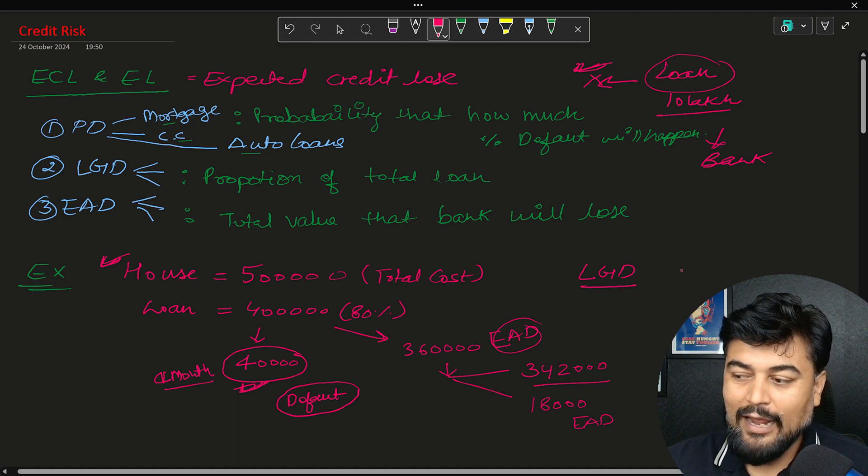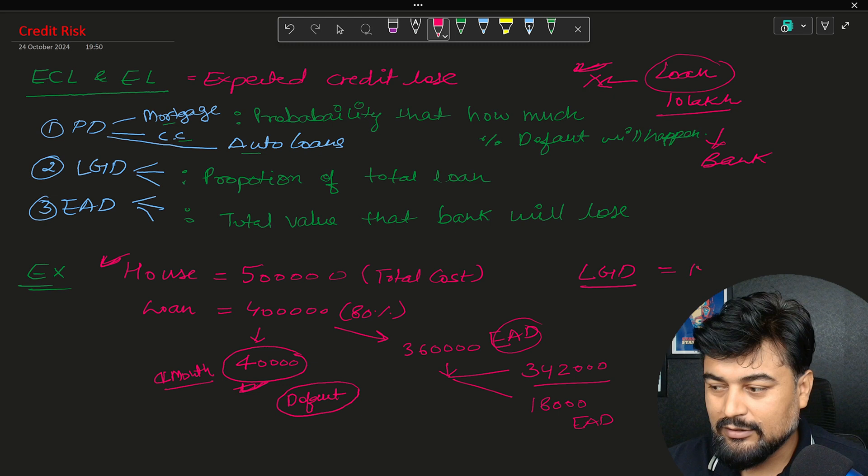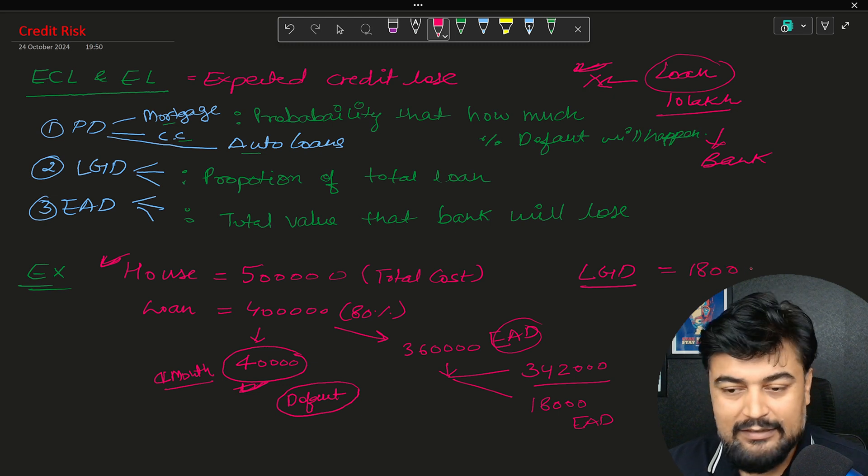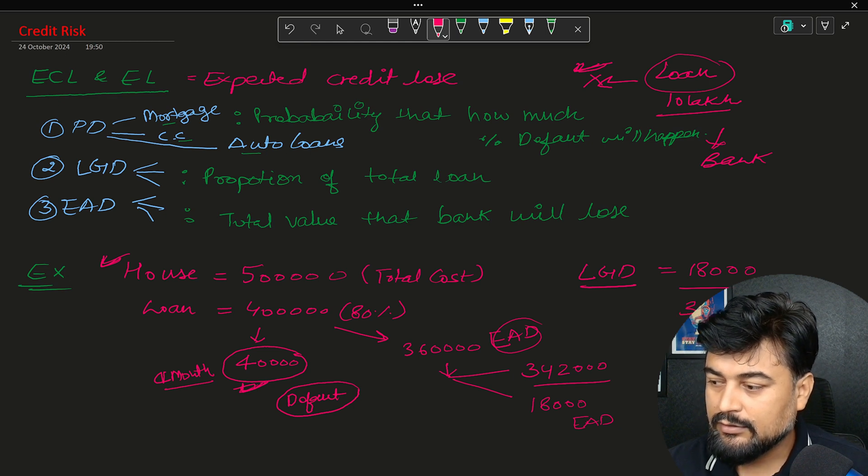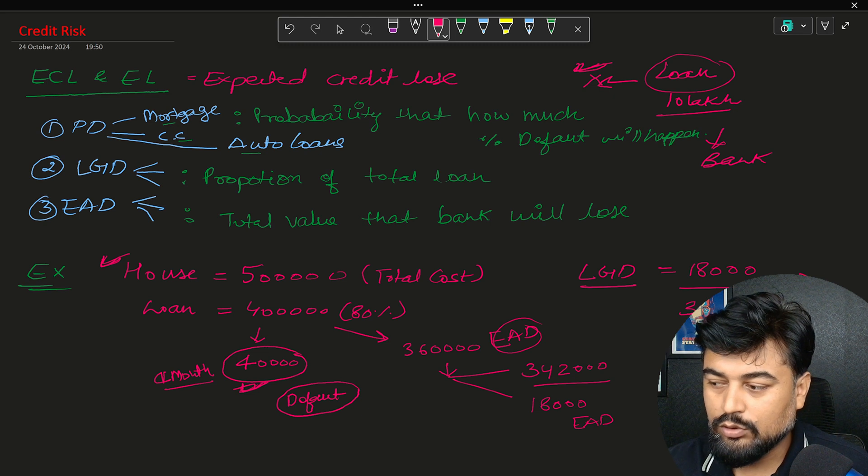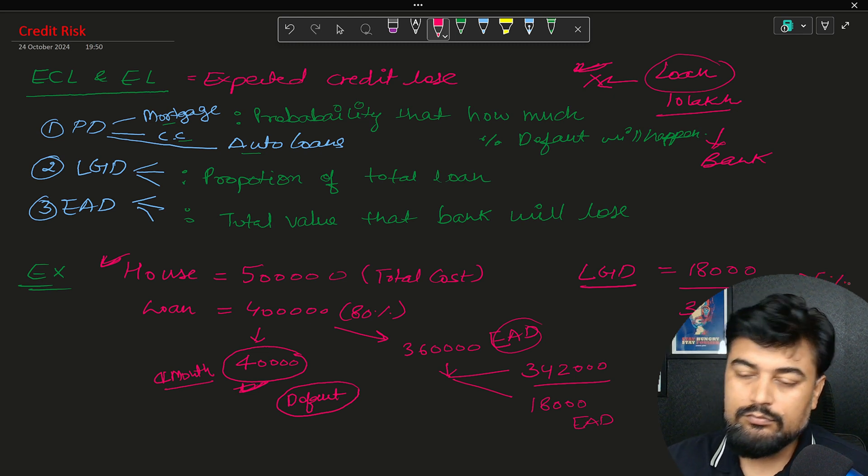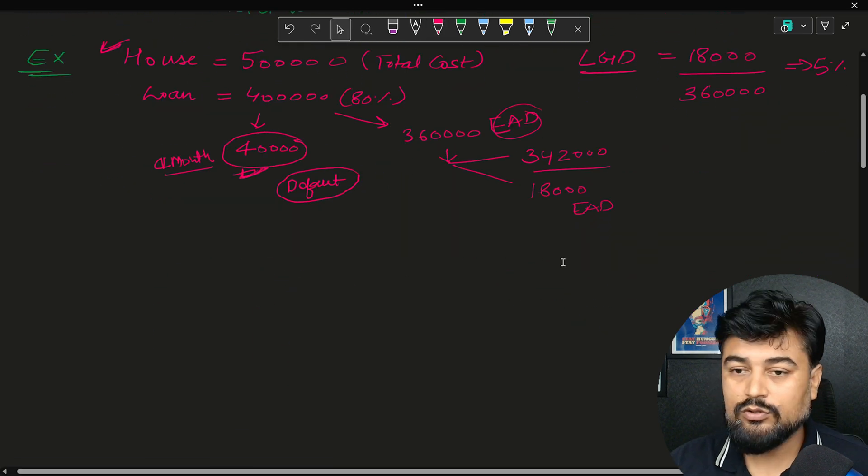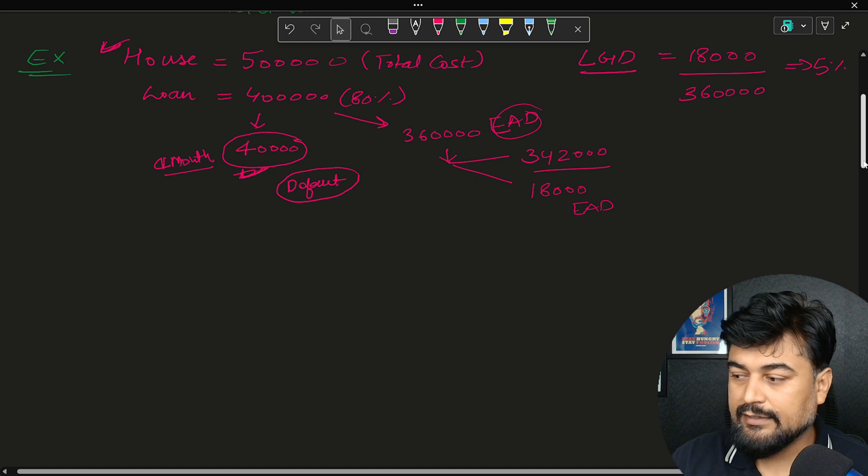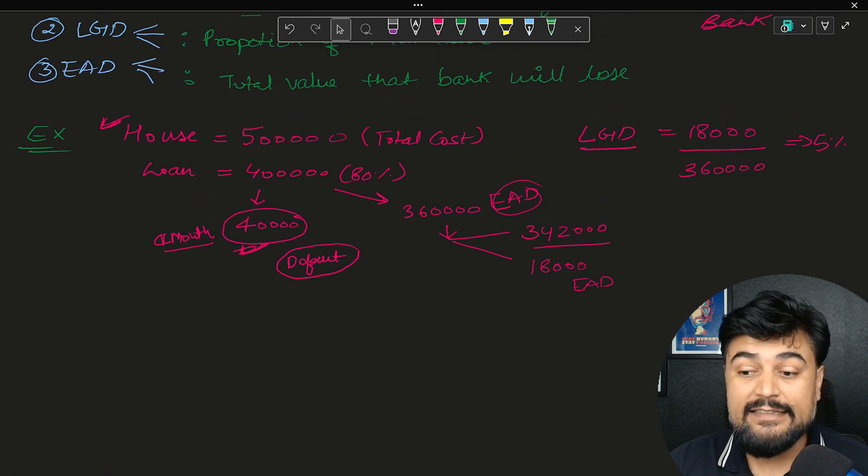Now how you calculate LGD? So LGD is a bit simple. Now if you divide this 18,000 by what value? 3,60,000, which will come to close to 5%. So this 5% is known as your LGD amount.